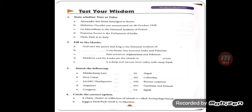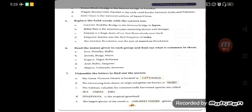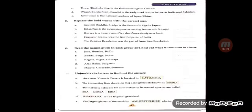Circle the correct option — two options are given with each statement and you have to identify the correct one. First: a chain, cluster, or collection of islands is known as an Archipelago. Second: Jogger's Park is in Mumbai. Third: the Tower Bridge is the famous bridge in London. Fourth: the Wagah Border is the only road border between India and Pakistan. Fifth: Kimi Gaya is the national anthem of Japan.